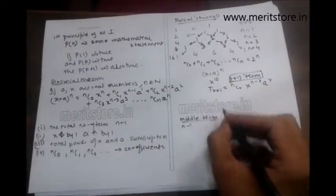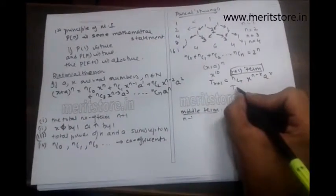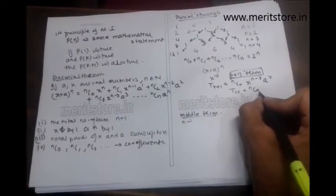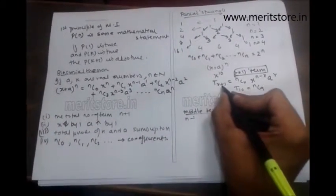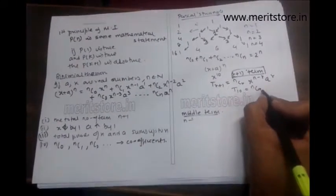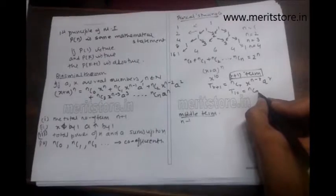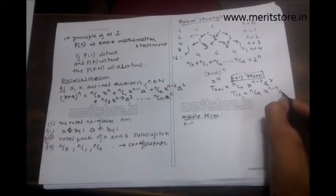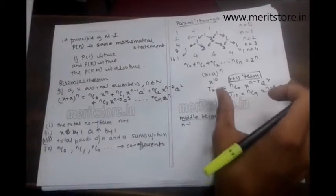For example, if I want to find the 10th term, this will be t 10 equals nc 9, because here there is r plus 1 whereas here you have r, so you will have to decrease this number by 1. So nc 9, x raised to n minus 9, a raised to 9. This is the general formula to find any term.